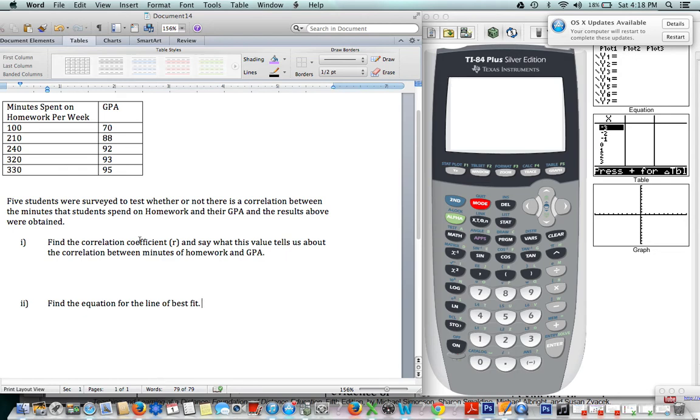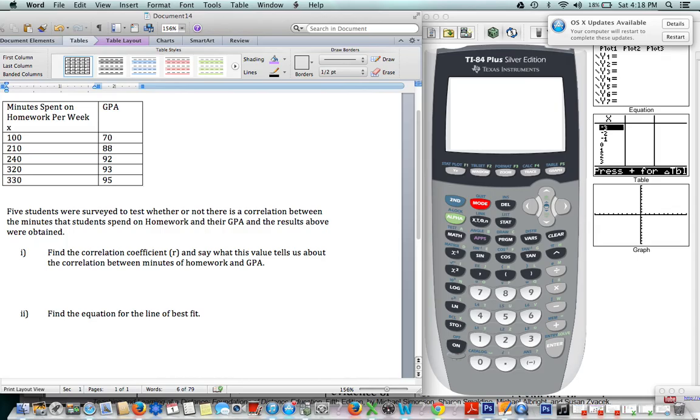And that's not the only thing that we're going to find out today. We're also going to find out, if there is a relationship, what's the relationship? So what is the relationship between, in this case, minutes spent on homework, which is our X, and GPA, which is our Y? Like what exactly is the relationship? So in order to find these things out, we're going to go into STAT in our calculator, and we're going to enter those values.